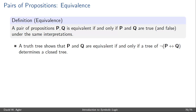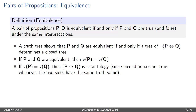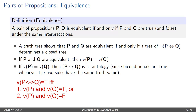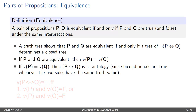A truth tree will show that P and Q are equivalent to each other if and only if a tree of the stack, not P double arrow Q, determines a closed tree. If P and Q are equivalent, then we know that the truth value of P equals the truth value of Q. If the truth value of P equals the truth value of Q, then a formula of the form P double arrow Q is a tautology. This is because a biconditional is true whenever the two sides have the same truth value, so P double arrow Q will always be true and therefore be a tautology.